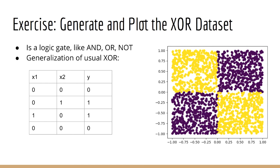We can write down the XOR using a truth table where X1 and X2 are the inputs and Y is the output.